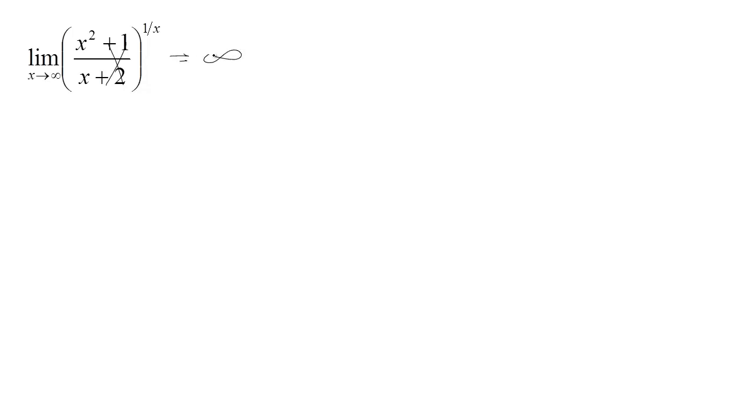So we have this is going to infinity here in the base, but then the exponent is going to 0. So we have this indeterminate form, infinity to the 0. So you might think, well, any number to the 0 should be 1, but what we're talking about is that the numbers here are getting bigger and bigger without bound.